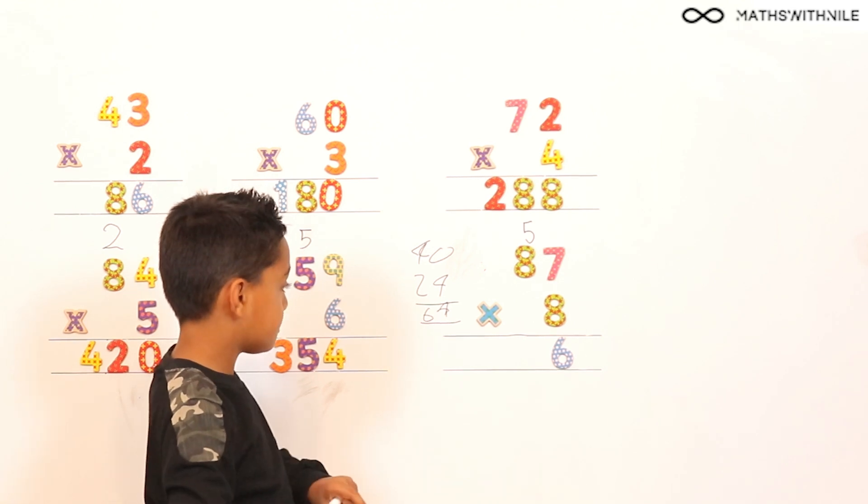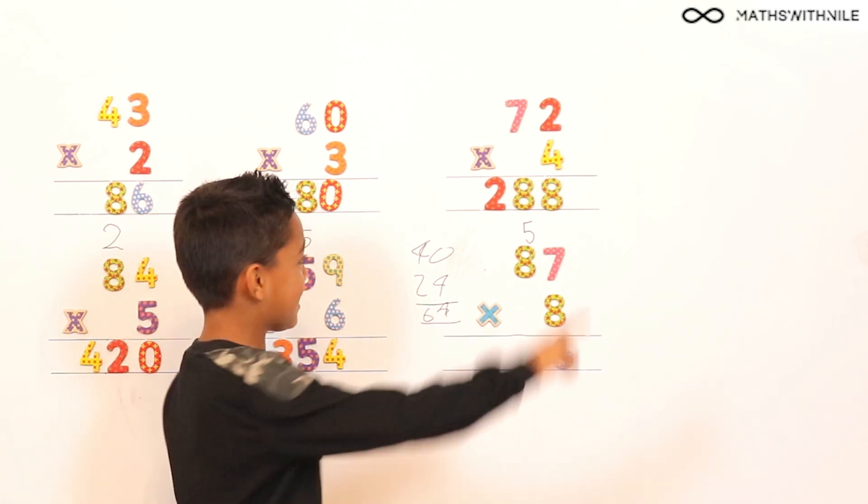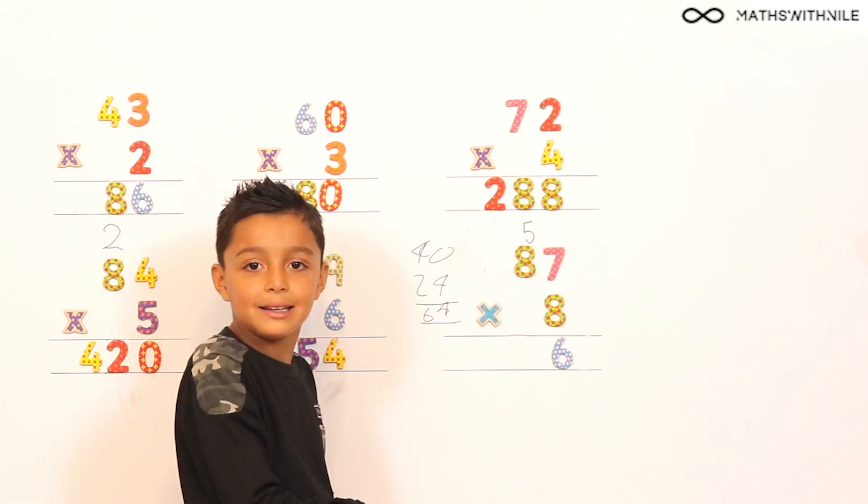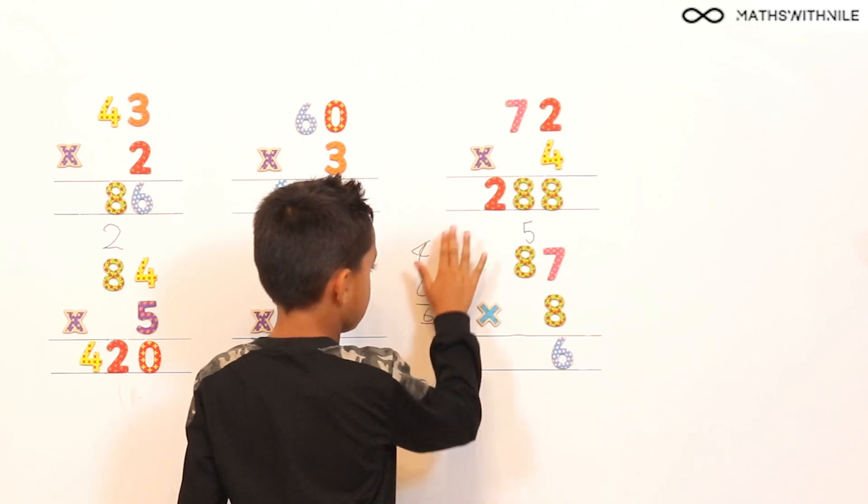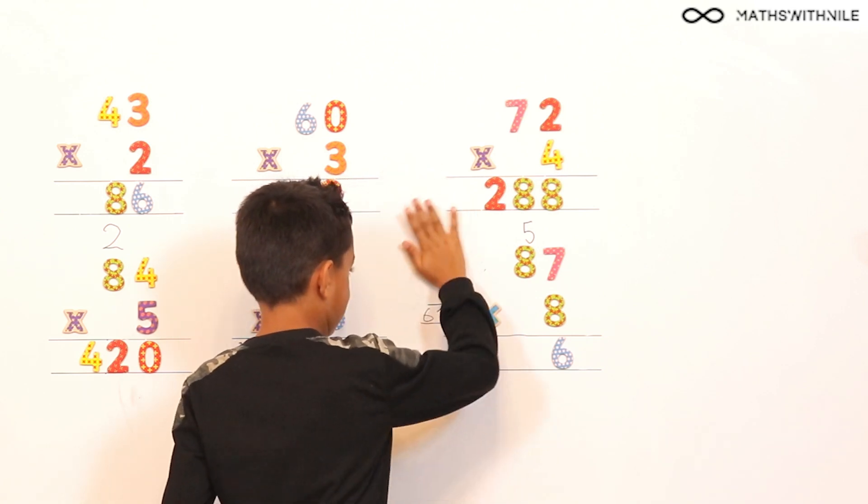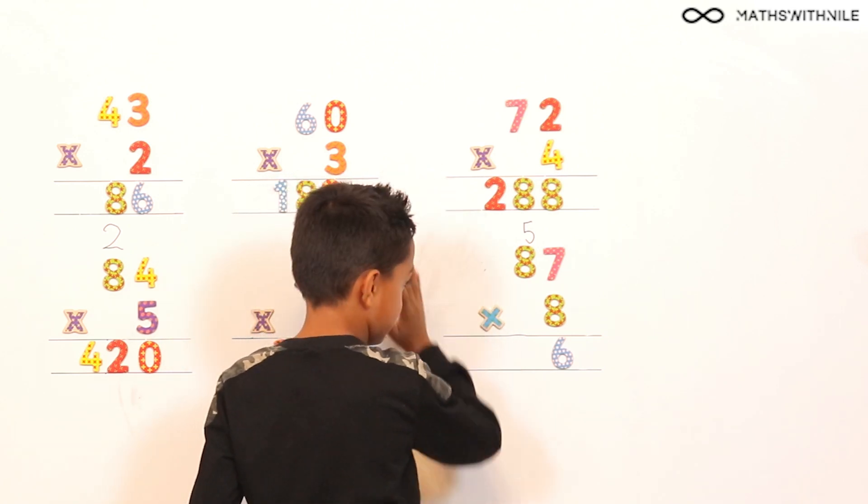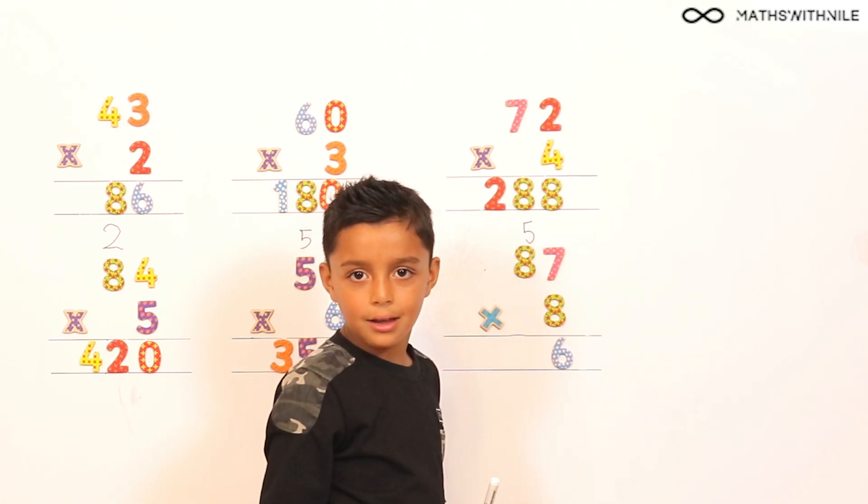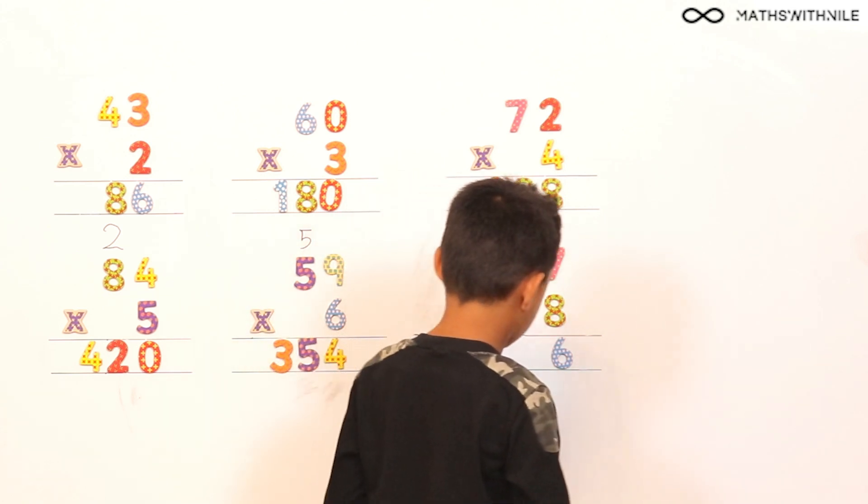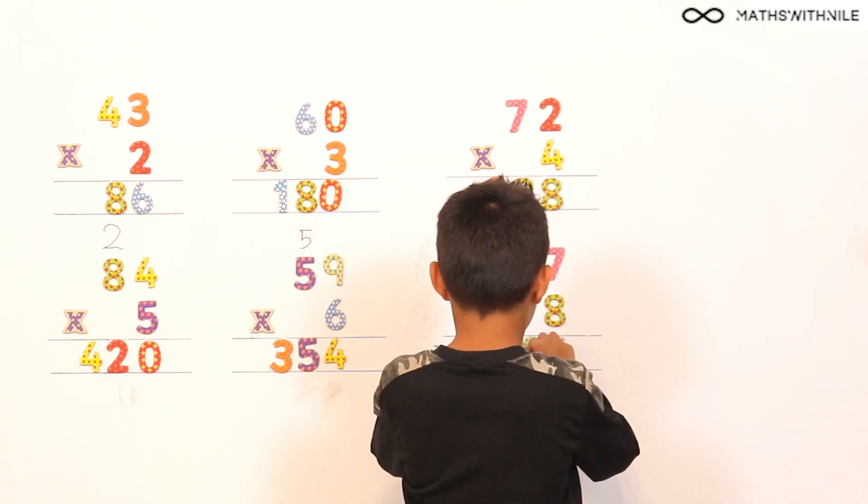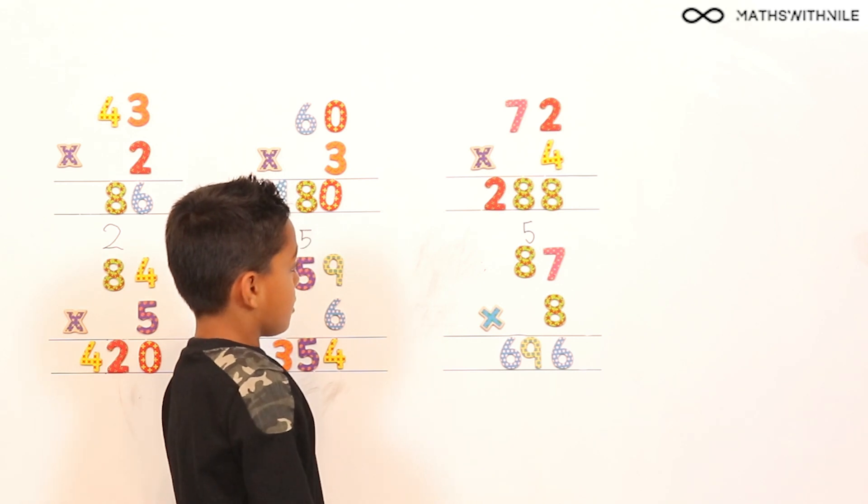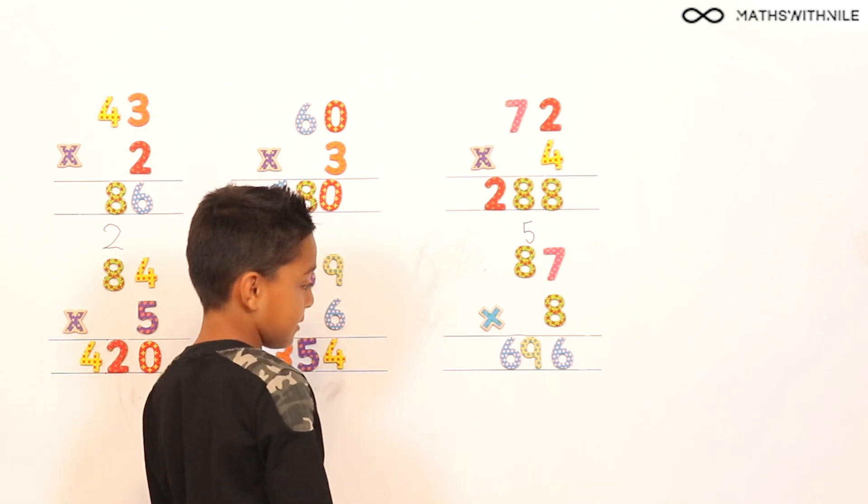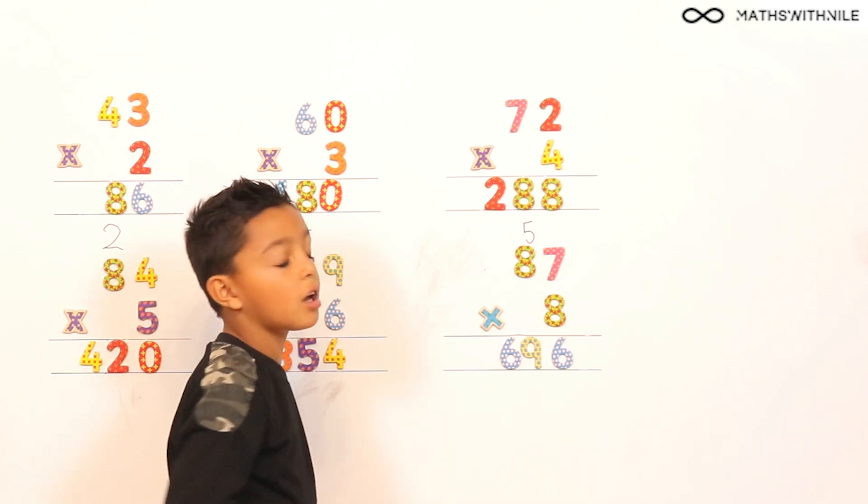So are you going to put 64 on that line? No! What are you going to do? I'm going to add the 5. Alright, go on then. Which is 69. Excellent. So you want to grab your numbers? Yes. 69 did we say? You did. Okay, 69. So can you tell us the question and the answer? 87 times 8 equals 696. Excellent, Niall. Brilliant.